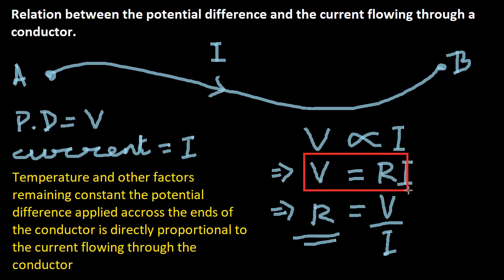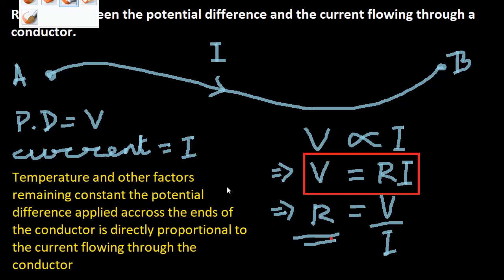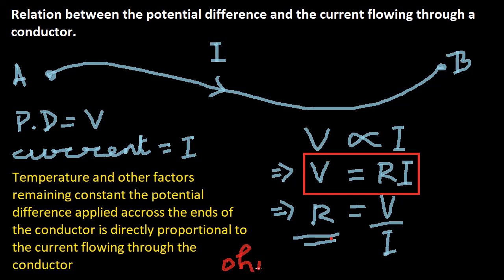The physical quantity called resistance is important, and its SI unit is named after the person who gave us this relation. The SI unit of resistance is known as the Ohm, and it has a symbol which is the Greek letter Omega — written in this way. So this is Omega, and this is the symbol for Ohm. We call it Ohm, and that is the SI unit for resistance.